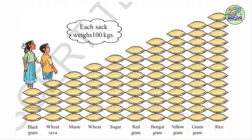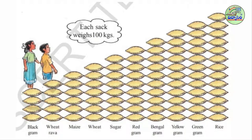Okay children, I think you understand the picture reading. Now look at this picture carefully. This is Raghavendra's stock. In the stock, these items are there: black gram, wheat rava, maize, wheat, sugar, red gram, bengal gram, yellow gram, green gram, rice. Observe this carefully — you know each bag contains 100 kgs. Now I will give you some questions.